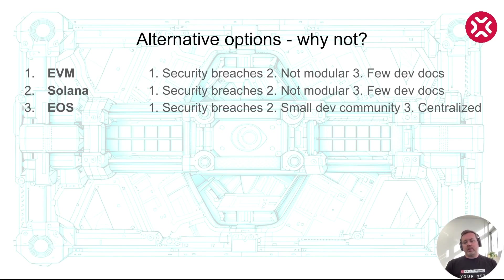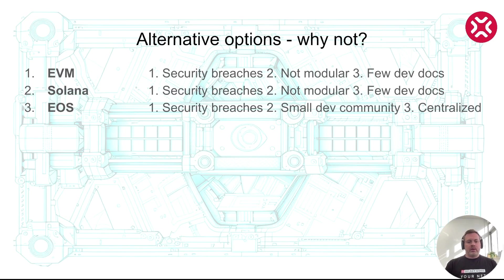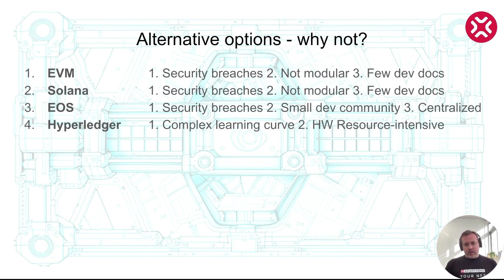EOS is another blockchain that uses C++ for writing its node. But unfortunately, again, we found out about security breaches and a very small developer community — when we needed to find information, it was very hard to get an answer. There is also a suspicion that the chain is centralized, and the way nodes communicate suggests it may not be suitable for a decentralized solution. So we discarded this idea. Hyperledger has a complex learning curve and is hardware resource intensive, meaning people would have to buy expensive equipment to run nodes, and it would be hard to write the code.